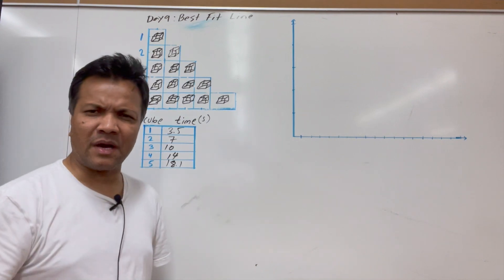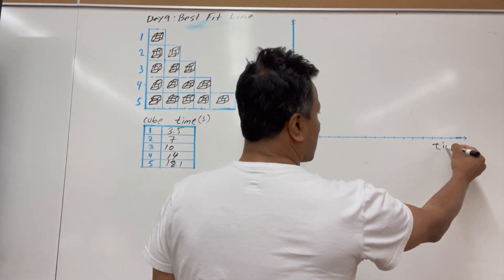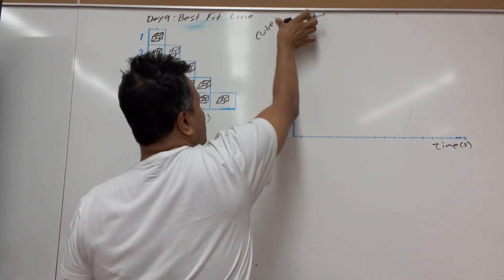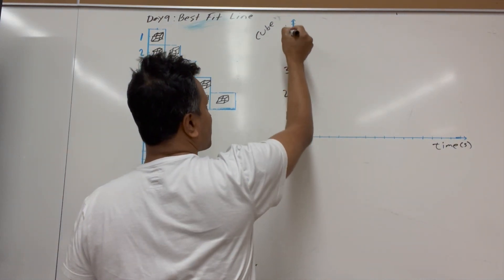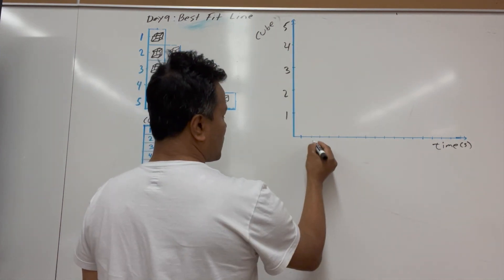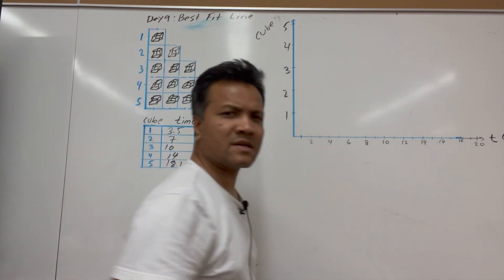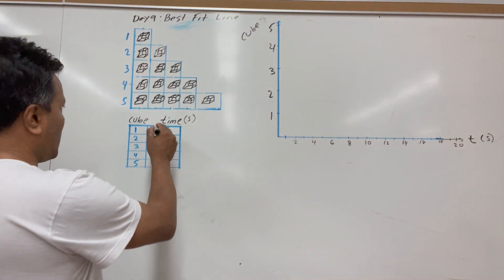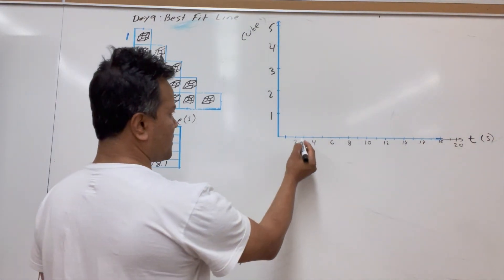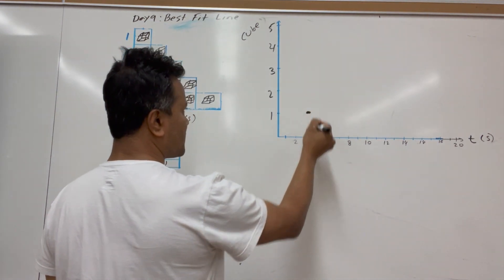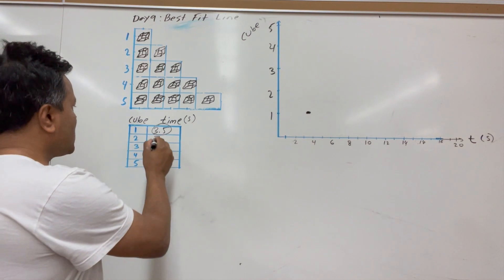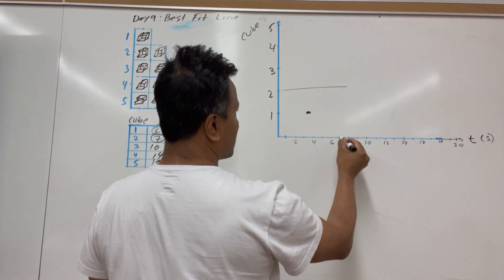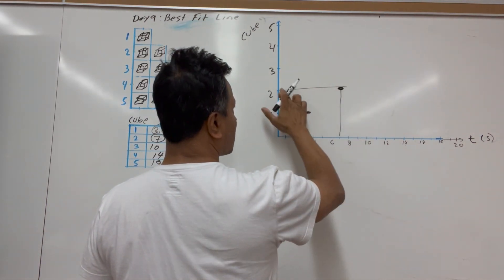We'll plot the graph — the x-axis is time in seconds and the y-axis is number of cubes: one cube, two cubes, three cubes, four cubes, and five cubes. So 3.5 seconds for one cube. Seven seconds for two cubes — so seven and two is plotted here.